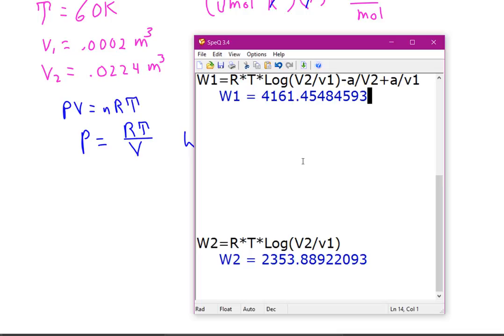And that is 2,353 joules. Now, the difference between 4161 and 2353 is that in the ideal gas law, each molecule is a point source. Thus, expansion doesn't require as much work to separate them.